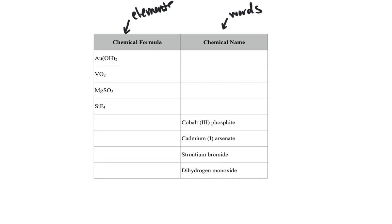So in order to do this, for the top four, we're going to take them apart. So you want to identify each of these, so Au is gold, and this is hydroxide.